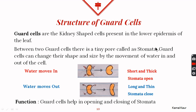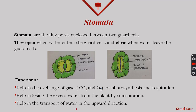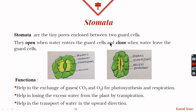Stomata can open or close by changing the size of guard cells, which they do by taking water in or out. When water moves inside the guard cells, they become short and thick and stomata open. When water moves out, guard cells become long and thin and stomata close. The function of guard cells is to help in opening and closing of the stomata, which are present on the lower surface of the leaf.